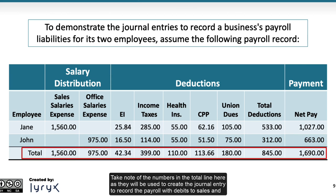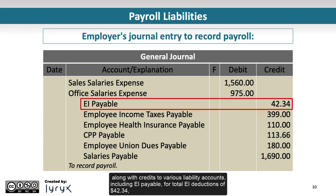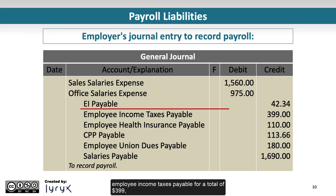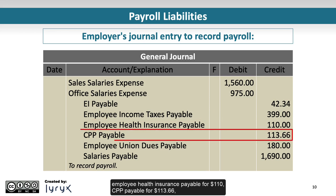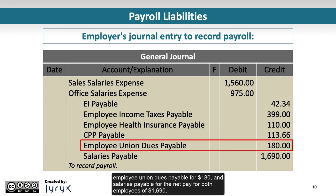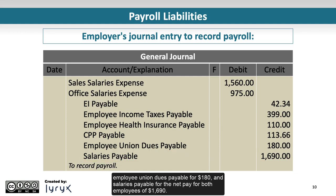Take note of the numbers in the total line, as they will be used to create the journal entry to record the payroll. The entry includes debits to sales and office salaries expenses for $1,560 and $975 respectively, along with credits to various liability accounts: EI payable for total EI deductions of $42.34, employee income taxes payable for $399, employee health insurance payable for $110, CPP payable for $113.66, employee union dues payable for $180, and salaries payable for the net pay of both employees totaling $1,690.